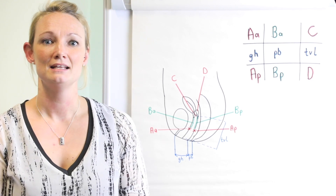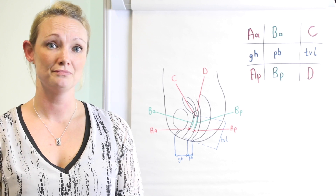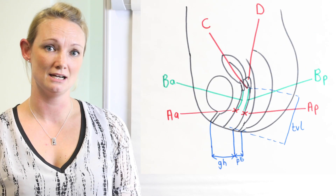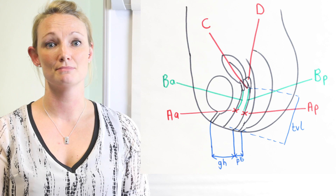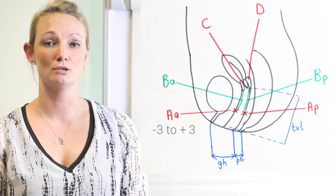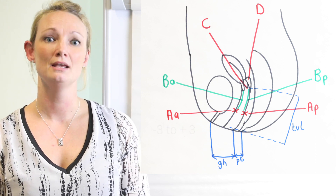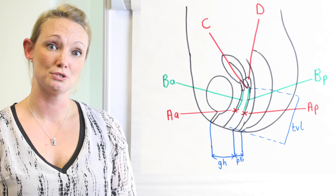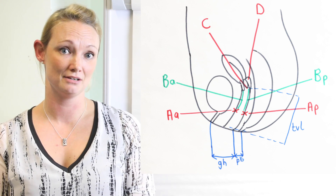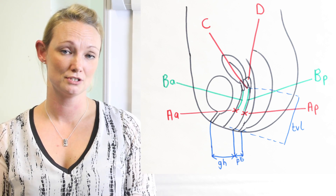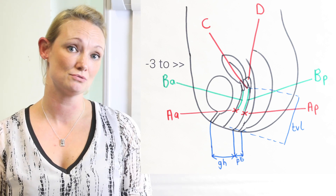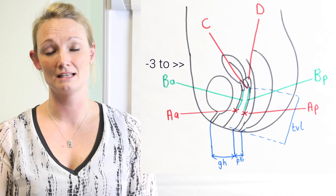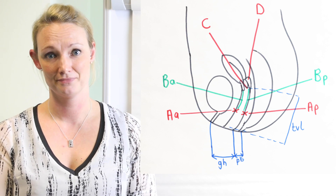AA is the point on the anterior vaginal wall that is three centimetres proximal to the hymen, so this could be recorded as minus three all the way down to plus three. BA is the most distal portion of the remaining upper anterior vaginal wall, so this could be minus three, but it could also come all the way out to plus five, six, seven or even more in extreme cases.